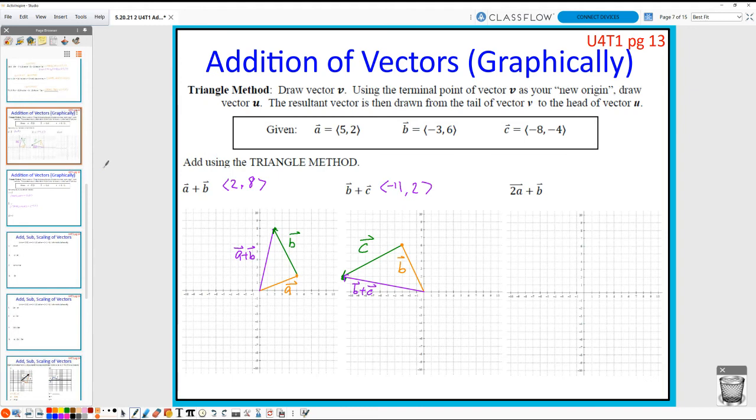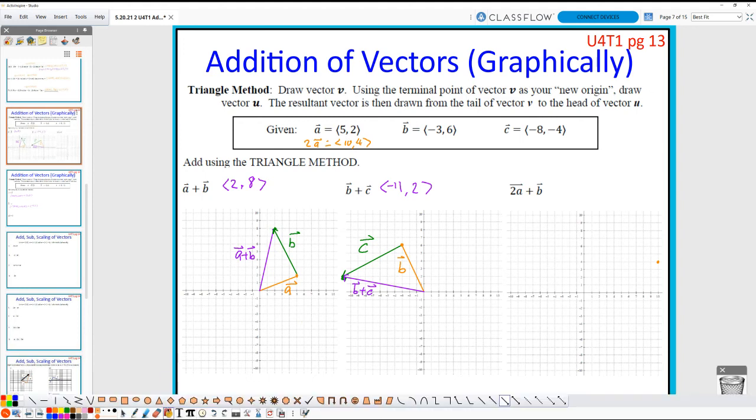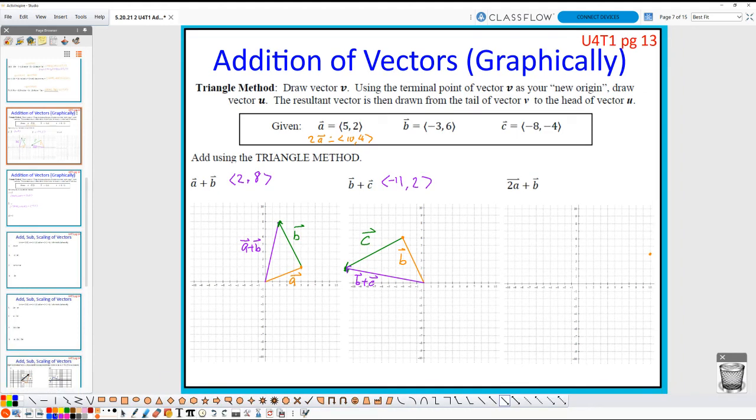And finally, now this one, there's a couple ways to kind of go about this. 2A, you can think about this a couple ways. You can first do it algebraically. Because I know what 2A is. 2A, A is <5, 2>. 2A then, that must be <10, 4>. So, I can first say, okay, 10, 4. All right, <10, 4>. This is the 10, 4 right here. So, this right here is 2A.